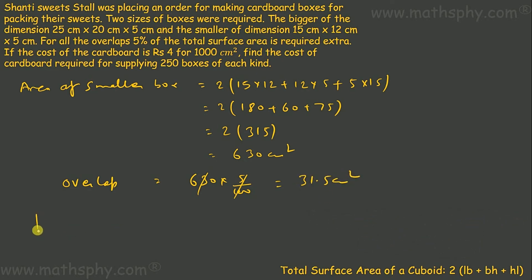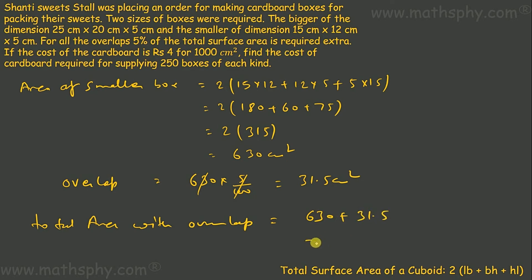Now let's calculate the overlap, which is 5% of 630 = 31.5 cm². So the total area with overlap would be 630 + 31.5 = 661.5 cm². This is the area of cardboard required to make one smaller box.